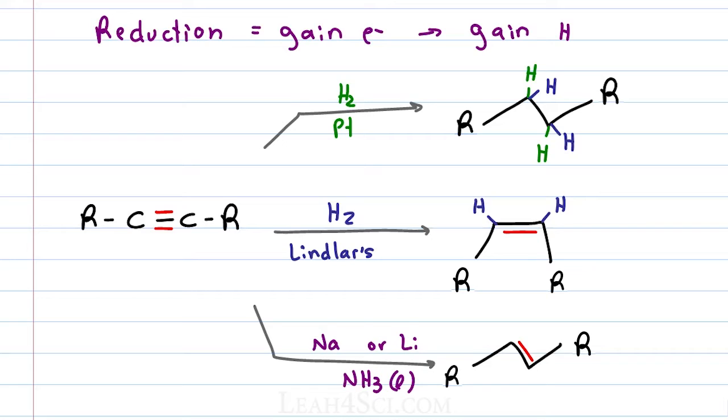This reaction will break one pi bond and give us two hydrogen atoms that add anti or opposite from each other, pushing the R groups anti or opposite from each other for a trans product.